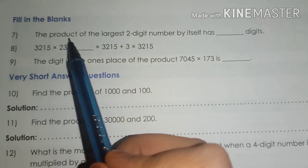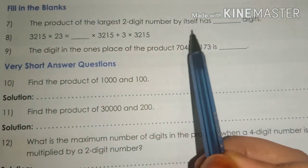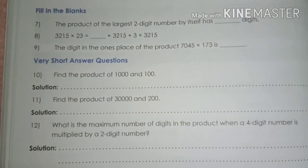Question number 7. The product of the largest two-digit number by itself has dash digits. In our previous video, while solving question number 4...